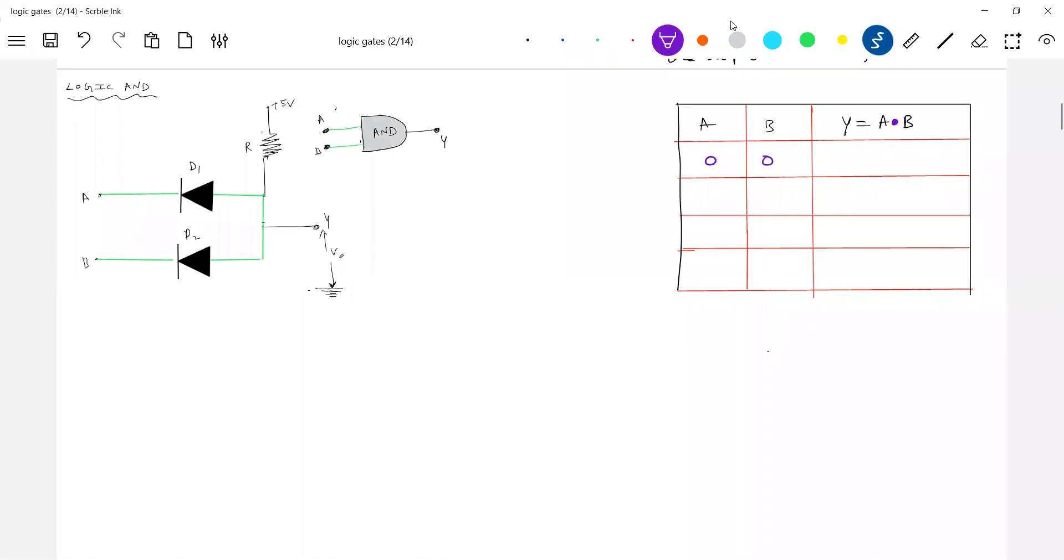Both inputs are low, output will be low. Any one input is low, the output will be low. When both the inputs are high, then only it will be high. So let me write that logic. What is the logic AND operation?